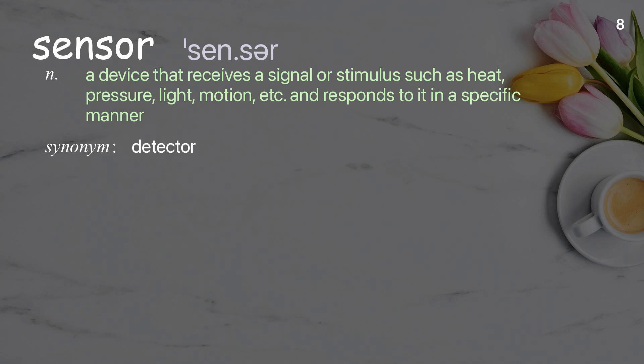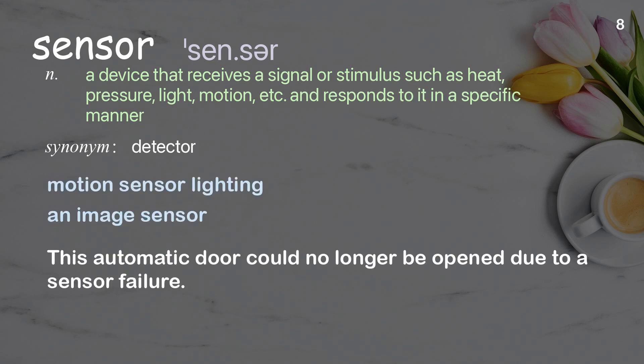Sensor: A device that receives a signal or stimulus such as heat, pressure, light, motion, etc., and responds to it in a specific manner. Examples: Motion sensor lighting. An image sensor. This automatic door could no longer be opened due to a sensor failure.